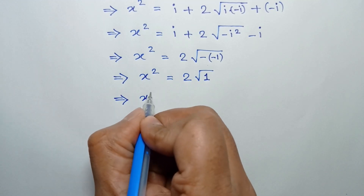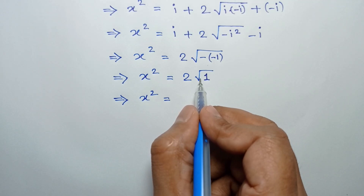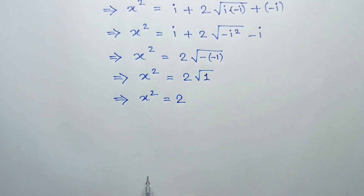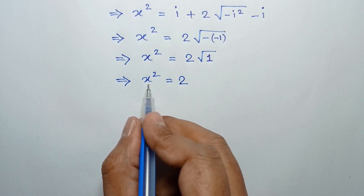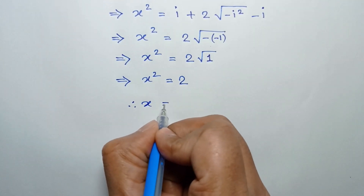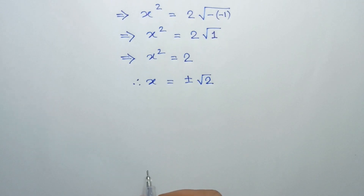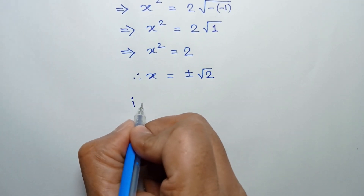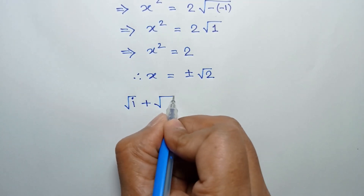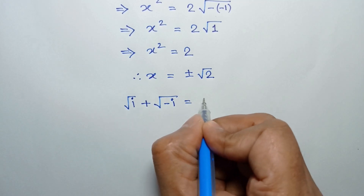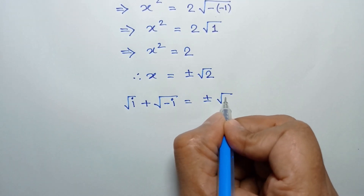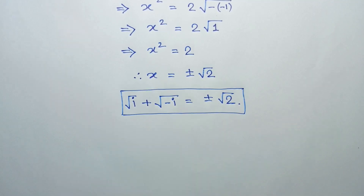So x squared is equal to 2 times square root of 1, which is 1, giving x squared equals 2. Taking square root of both sides, x is equal to plus or minus square root of 2. So the value of square root of i plus square root of negative i is equal to plus or minus square root of 2. This is the solution. If you like this video, please subscribe to my channel. Thanks for watching.